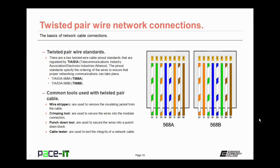When working with twisted pair cable, there are some common tools you should have. First is the wire stripper, used to remove the insulating jacket from the twisted pair cable. Then there's the crimping tool, used to secure the wires into the modular connector — the RJ45 or RJ11. You should also have a punch down tool, used to secure wires into a punch down block, which is a common component in the modern local area network. Finally, you should have a cable tester, used to test the integrity of the network cable.